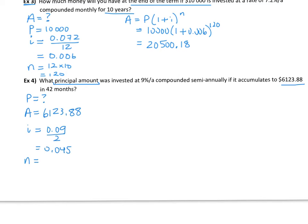Now we have to be careful here because it's compounding semi-annually in 42 months. We need to figure out how many times it's going to compound. So it compounds every half of a year, which is every six months.